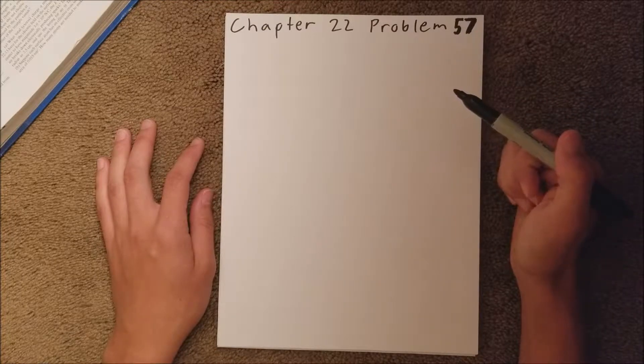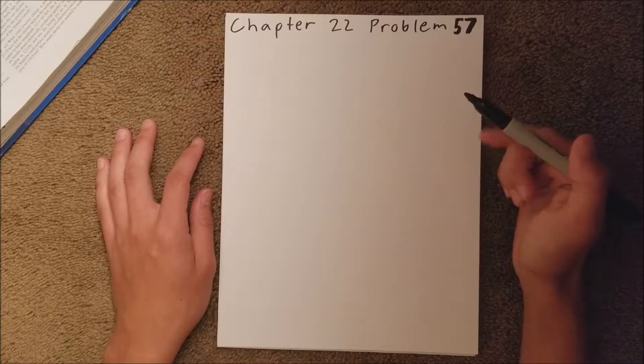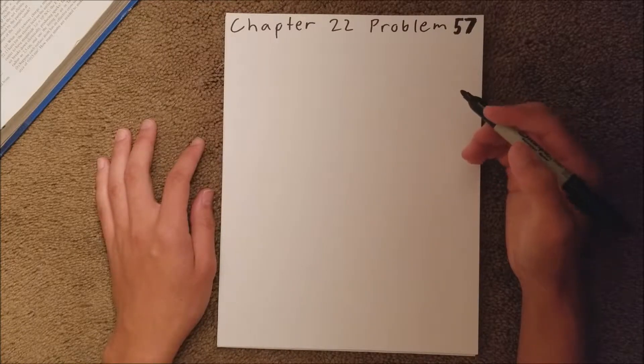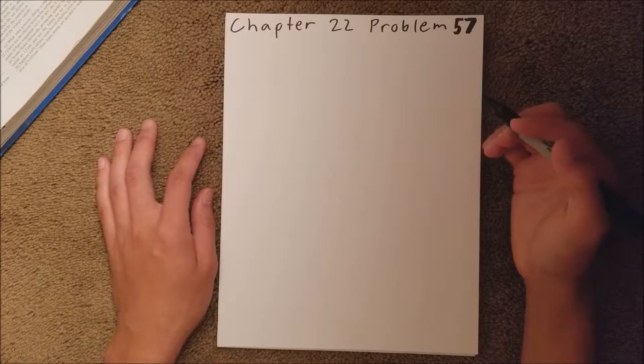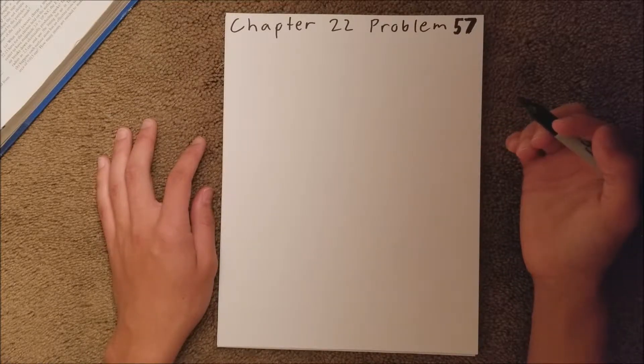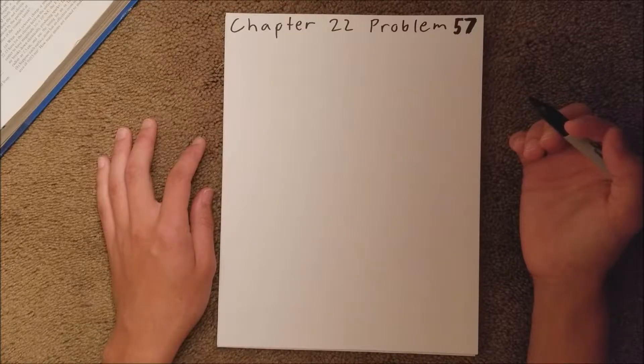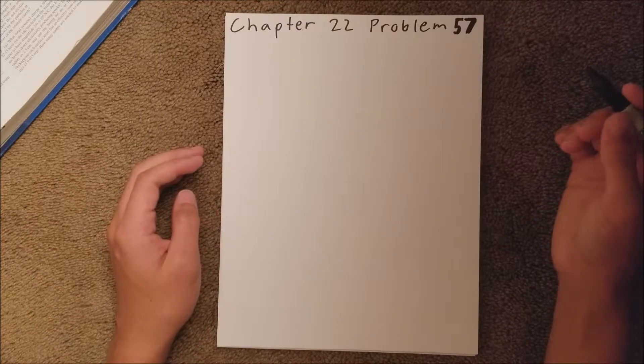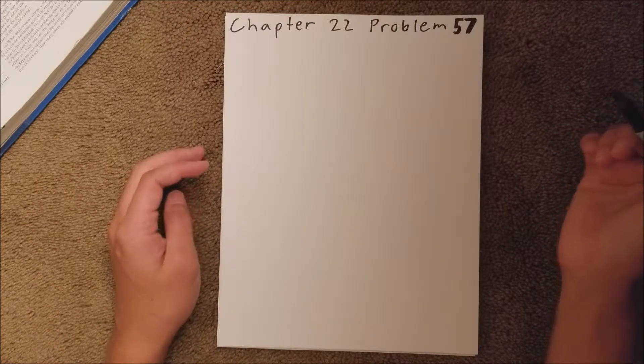Chapter 22 is all about electric fields, and in problem 57, we have an electric dipole. We are given the magnitude of the charges, their separation (the distance between them), and the strength of the electric field that they're in.